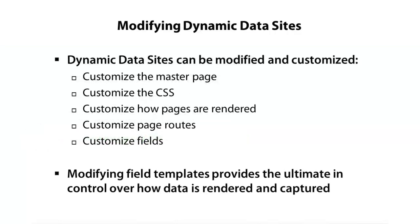There are a lot of things you could do. You could modify the master page, tweak the CSS to change the fonts or the colors, or actually change how the different edit or list pages render their data. We can even change how the URL is displayed in the browser and change what's called the routes.